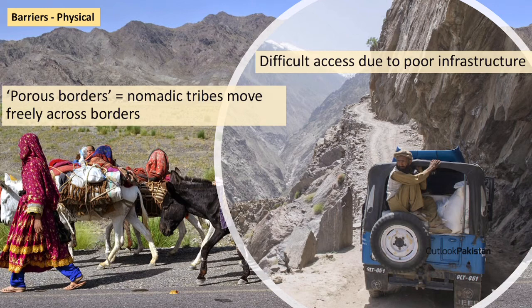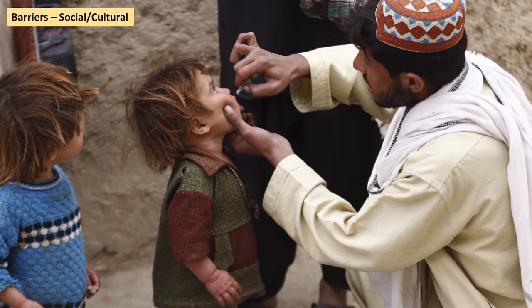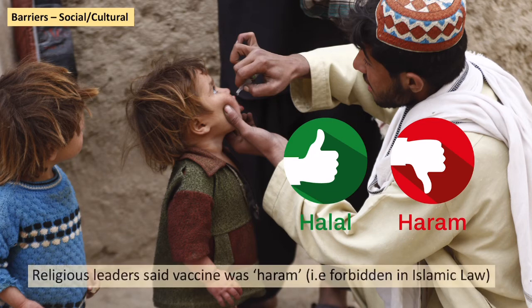There are also social and cultural barriers. During the big push by WHO and UNICEF to eradicate polio in Pakistan, some religious leaders declared that the vaccination was haram — forbidden under Islamic law. In a large Muslim country, this meant many people refused the vaccine, significantly reducing the proportion that could be vaccinated.